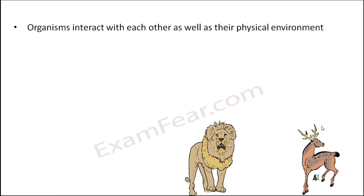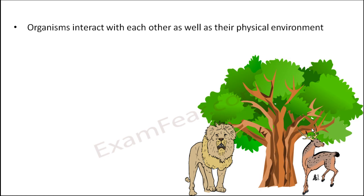Think of this deer. Deer also needs food. What are those things on which the deer feeds upon? It feeds on plants. So we can say that the lion is dependent on the deer and the deer is dependent on the plants.